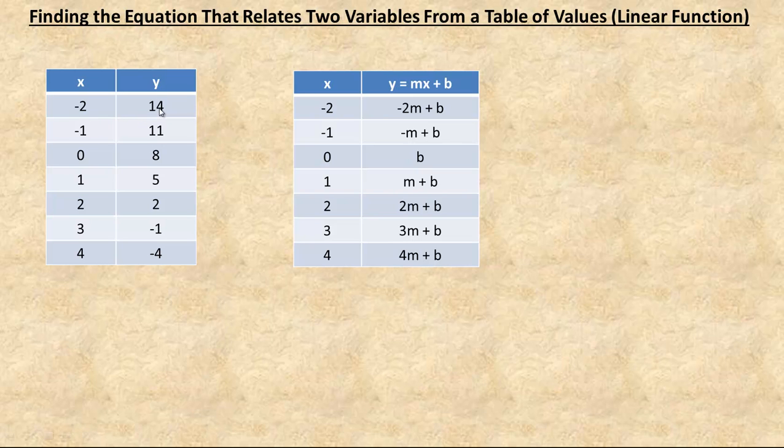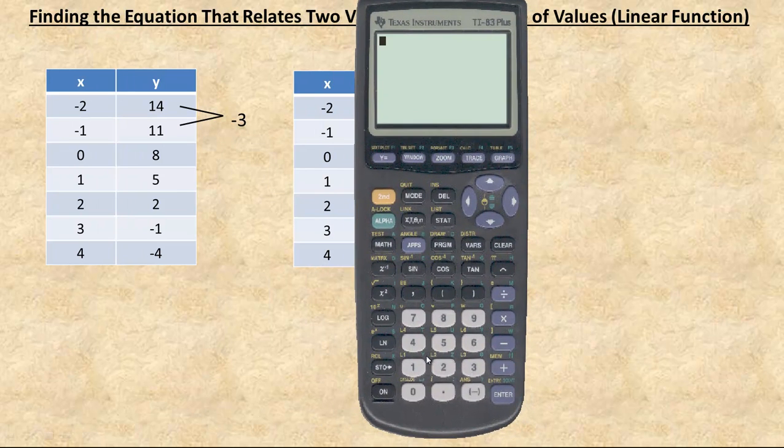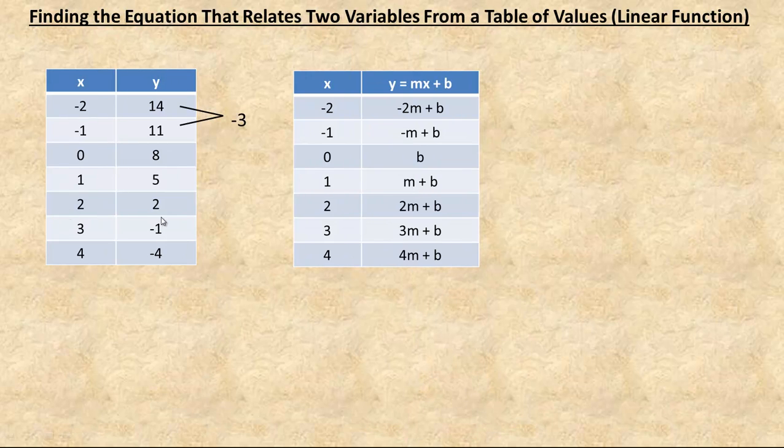So the first thing you do is find the differences now that they're in order between the successive y values. To go from 14 to 11 is going down 3. So make sure you put a negative there if it's actually going down. The actual calculation in your calculator, we would type in the 11, and we would subtract from that the 14 above it. And so that gives you negative 3. The next one is 8, so we would go 8 minus 11. And again, that's negative 3. So this next difference would be a negative 3.